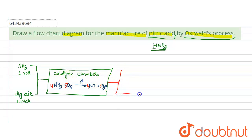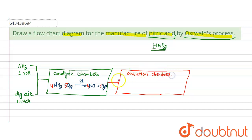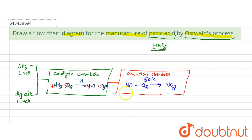The nitrogen monoxide formed is then converted into nitrogen dioxide in the presence of oxygen. This reaction takes place at 50 degrees Celsius. The balanced equation is: 2NO + O2 → 2NO2.